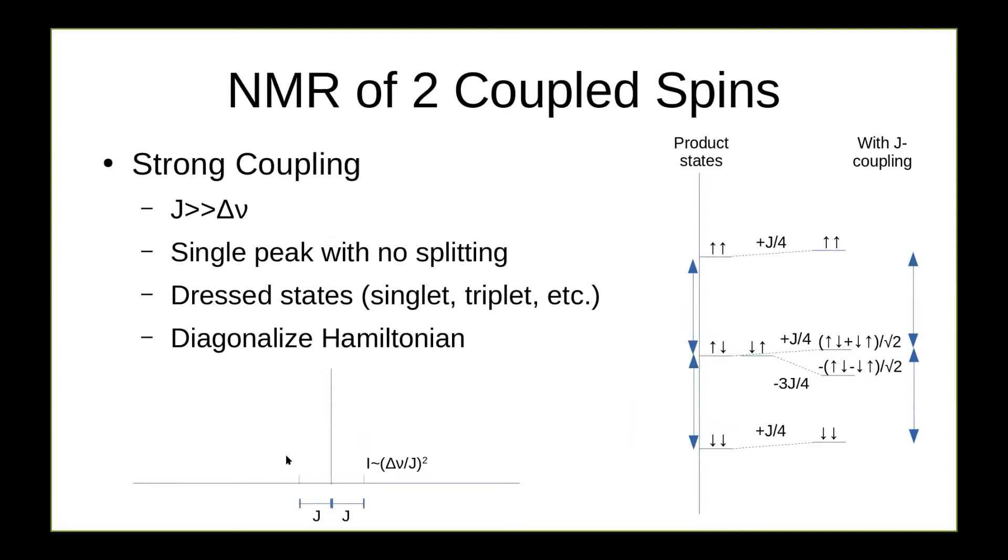However, if we flip the situation around, you have what I would call the strong coupling regime, where J is much greater than delta nu, we see something altogether different. As delta nu goes to zero, we end up with just a single peak in the center, which is the interaction between the now triplet states, T plus, T zero, and T minus. And we don't get an interaction between those and the singlet state. So these become forbidden. The intensity dropping now quadratically with this ratio delta nu over J. And to get these states, we can't use perturbation theory anymore. We have to diagonalize the Hamiltonian.